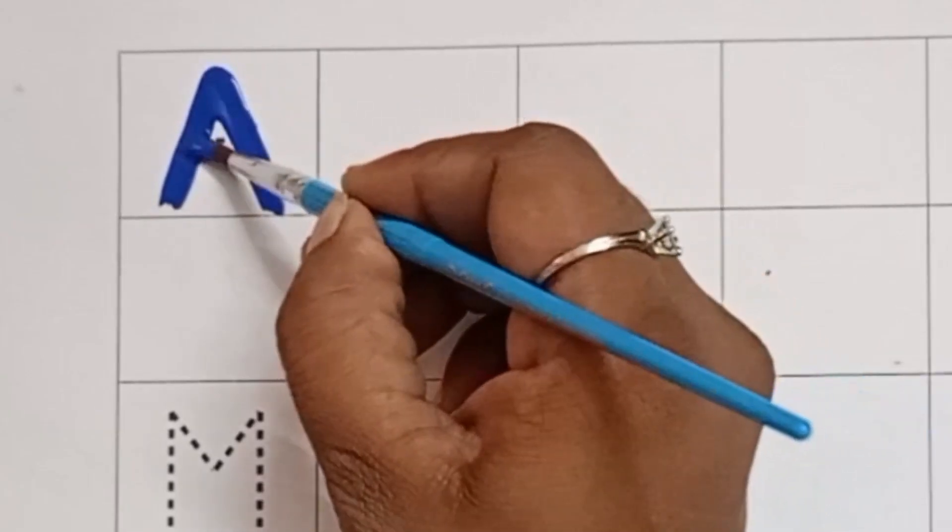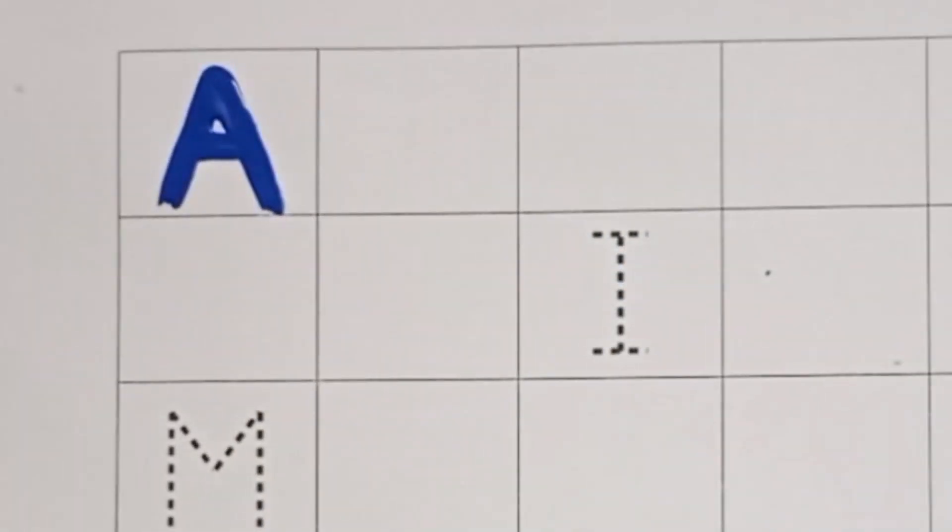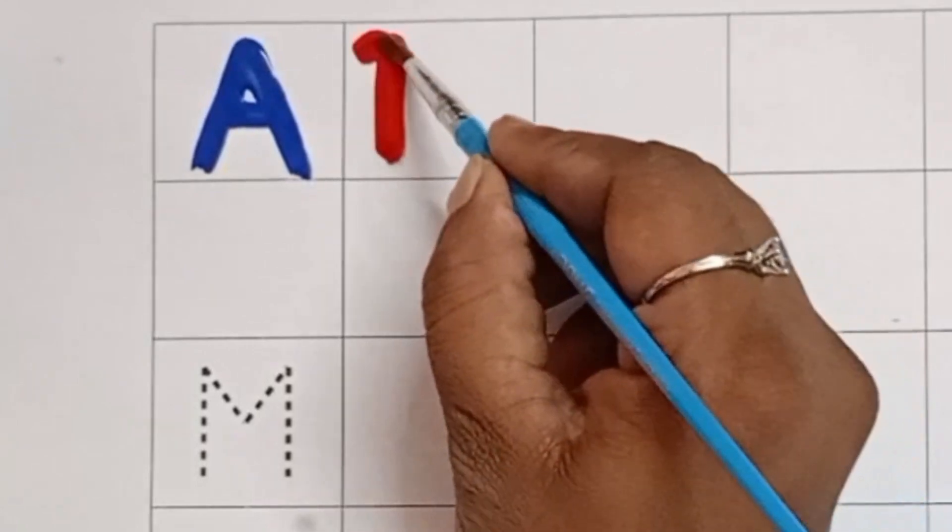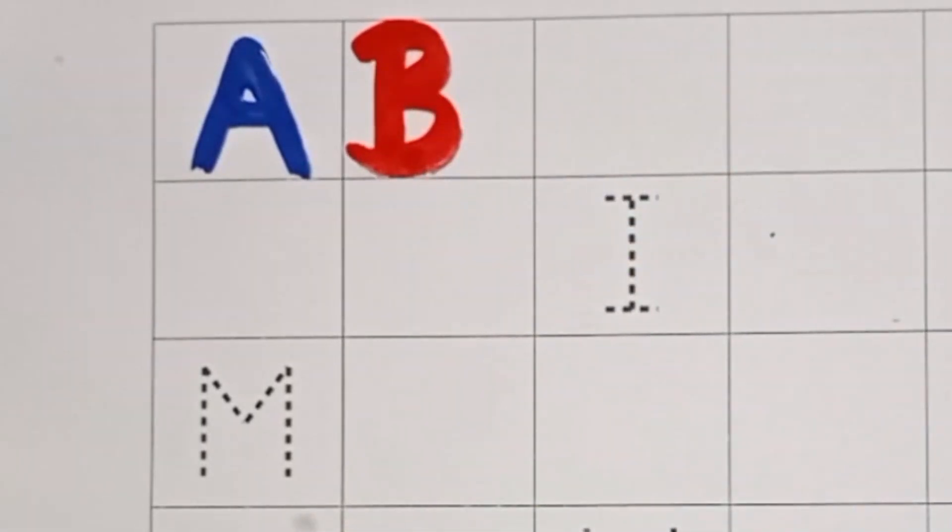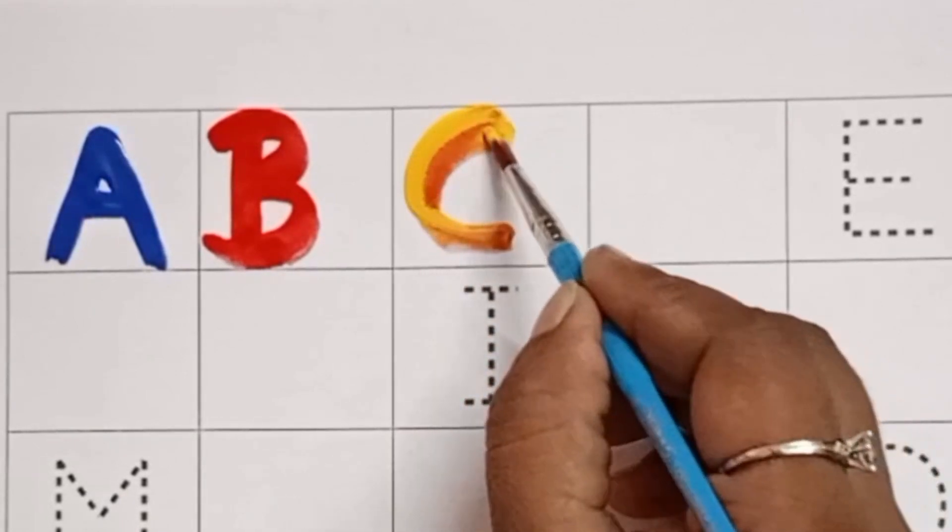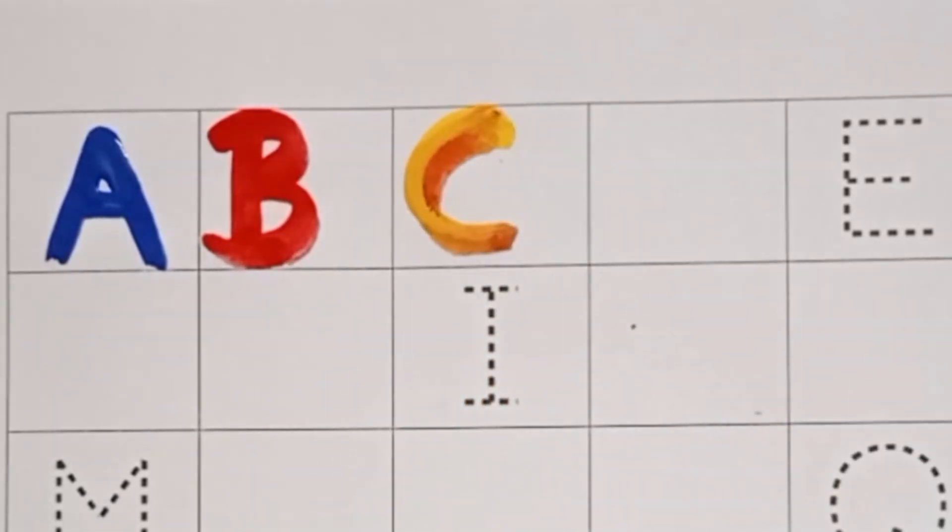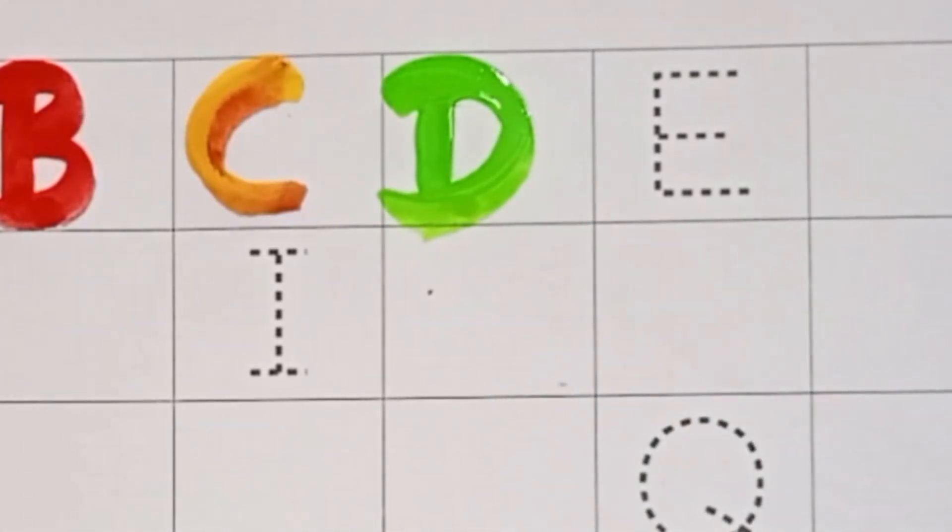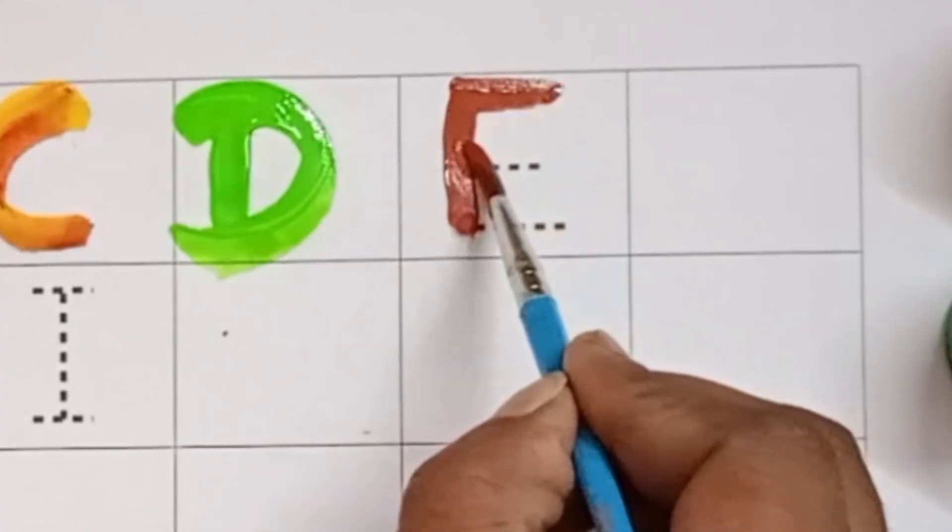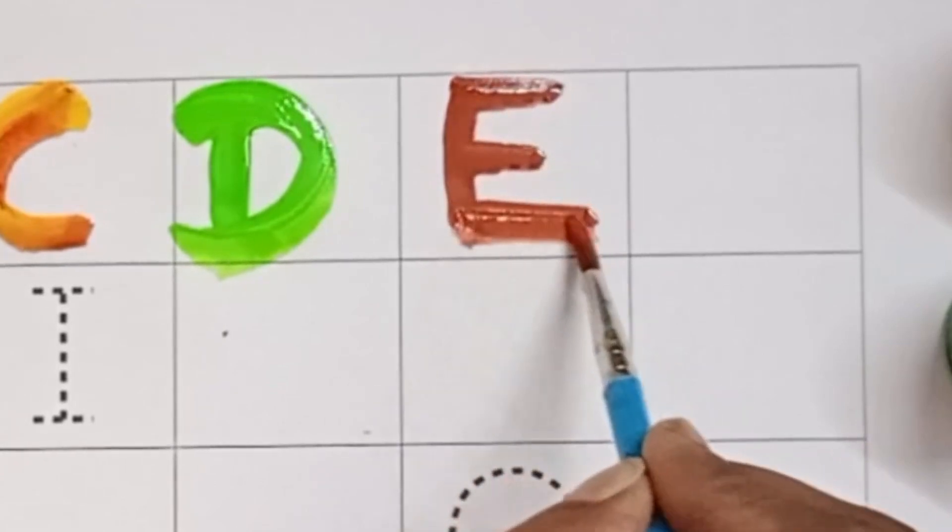A. A for alligator. B. B for banana. C. C for cat. D. D for dinosaur. E. E for eagle.